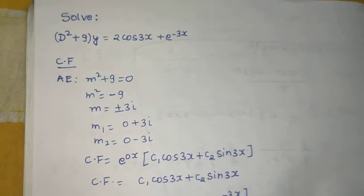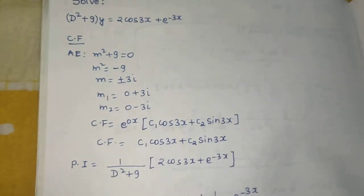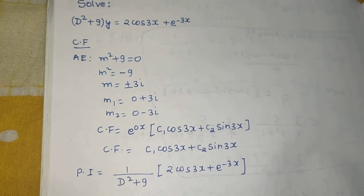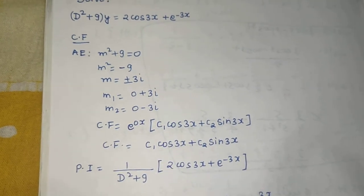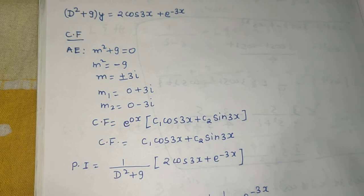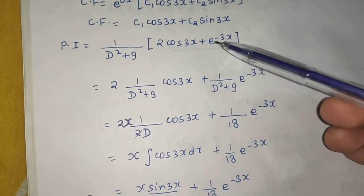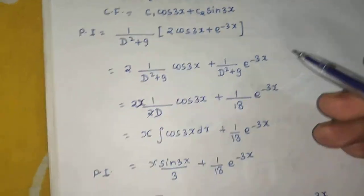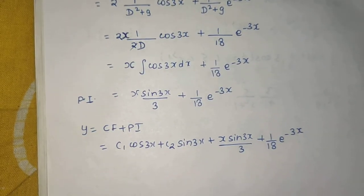Easy one. Just find the complementary function, which was again easy if you know the concept of how to write for the conjugate complex numbers, and then the particular integral separated and applied two different rules to get to my final answer.